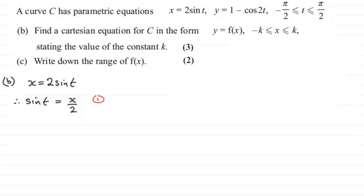Now when I look at y equals 1 minus cosine of 2t, then I'm going to expand this using the sine version. And we should be familiar with this. This is the same as 1 minus (1 minus 2 sine squared t).